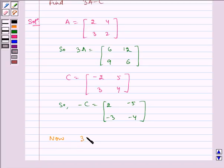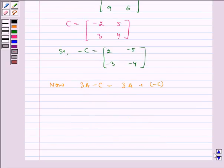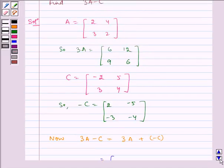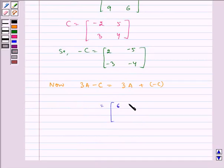Now 3A minus C equals 3A plus minus C, which equals 3A is 6, 12, 9, 6.